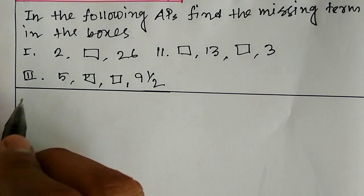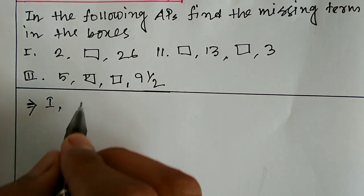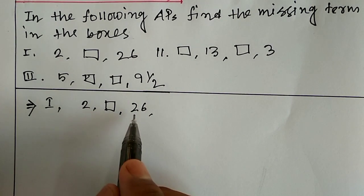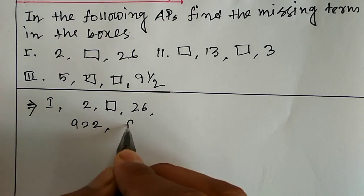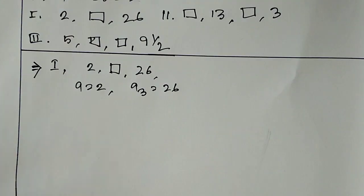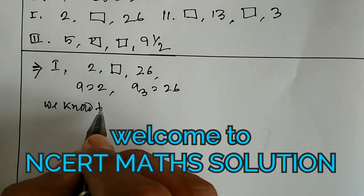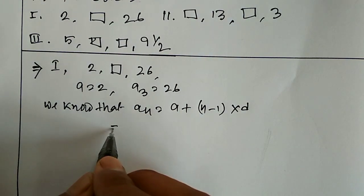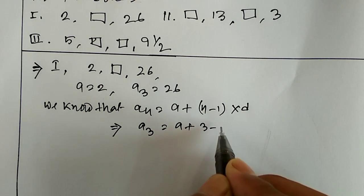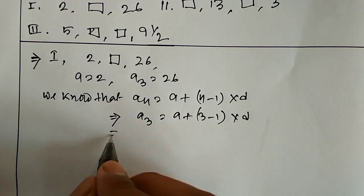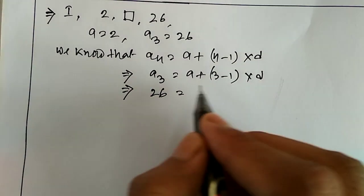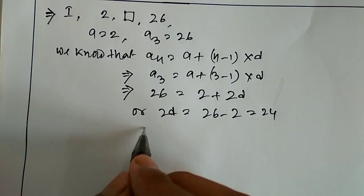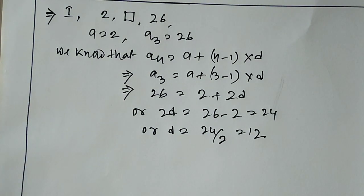Now we solve question number 1: 2, box, 26. Here the first term a equals 2 and third term a3 equals 26. We know that a_n equals a plus (n minus 1) into d. So a3 will be a plus (3 minus 1) into d, meaning 26 equals 2 plus 2d. Therefore 2d equals 24, so d equals 12.